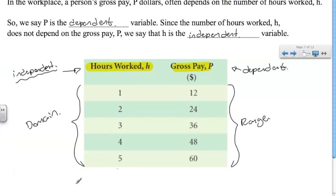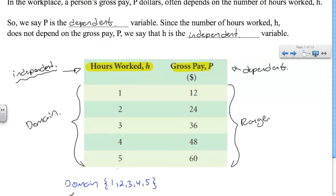Sometimes you'll be asked to write out the domain and range, which is common in tables. When you do, write them in curly brackets. For example, if the domain is 1, 2, 3, 4, 5, write it as {1, 2, 3, 4, 5}. For the range, do the same: {12, 24, 36, 48, 60}.